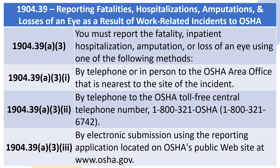1904.39(a)(3): You must report the fatality, inpatient hospitalization, amputation, or loss of an eye using one of the following methods: by telephone or in person to the OSHA area office nearest to the site of the incident; by telephone to the OSHA toll-free central telephone number, 1-800-321-OSHA (1-800-321-6742); or by electronic submission using the reporting application on OSHA's public website at www.osha.gov.